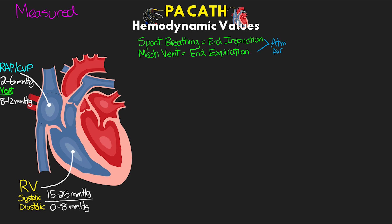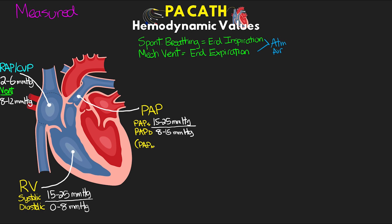Continuing on from there, we enter the pulmonary artery. So we have our pulmonary artery pressure, and here we're going to have our systolic pulmonary artery pressure, our diastolic pulmonary artery pressure, and then our mean pulmonary artery pressure. For our systolic here, this is going to be just like in the RV — normally 15 to 25 millimeters of mercury. For our diastolic, this is of course higher than we see in the RV, and so here normal is going to be 8 to 15 millimeters of mercury. And then for our mean pressure, this is normally 10 to 20 millimeters of mercury.